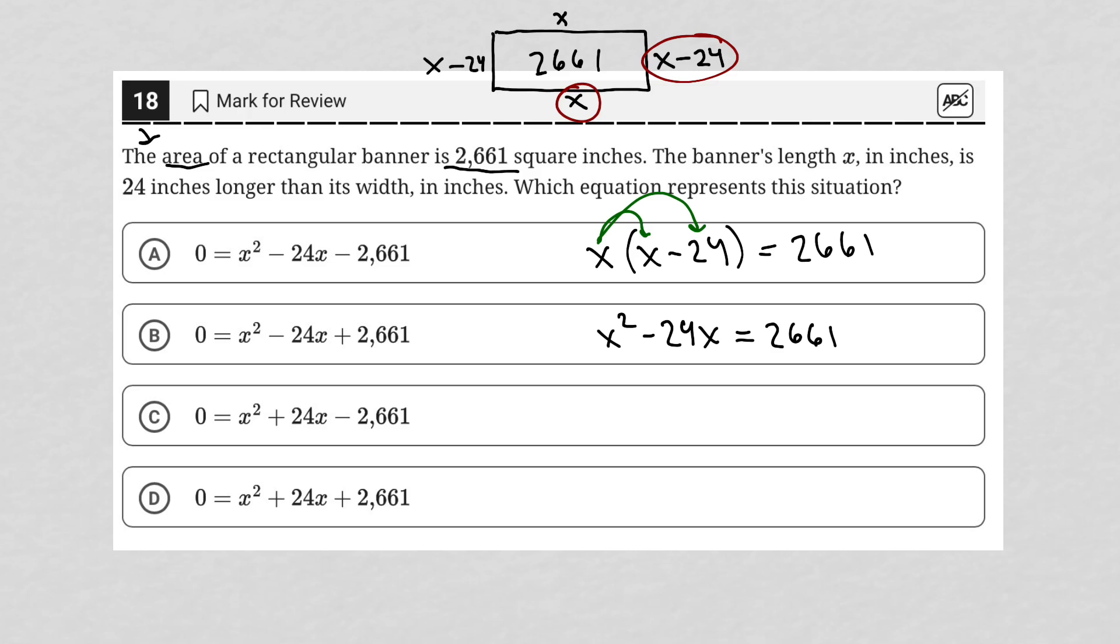I also don't see it there. Looks like everything is set to equal to zero. So I'll subtract 2661 from both sides of this equation, which leads me to x squared minus 24x minus 2661 is equal to zero. And that is therefore choice A.